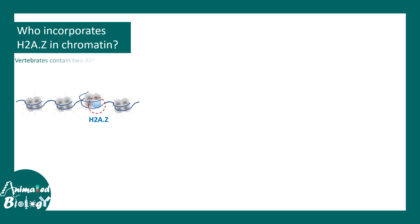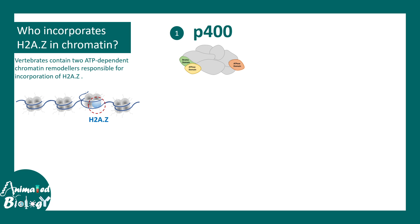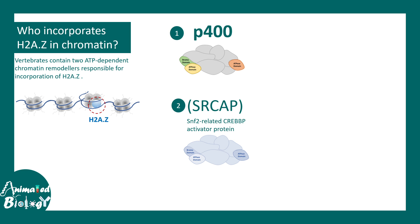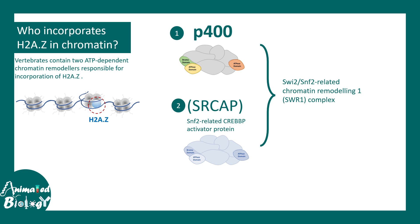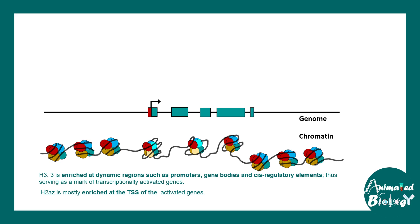Just like H3.3, there are specific ATP-dependent chromatin remodelers responsible for incorporating H2A.Z, such as the p400 family and SRC-AP family proteins, which actually incorporate H2A.Z into the nucleosome. These are both SWR1-type chromatin remodeling proteins.